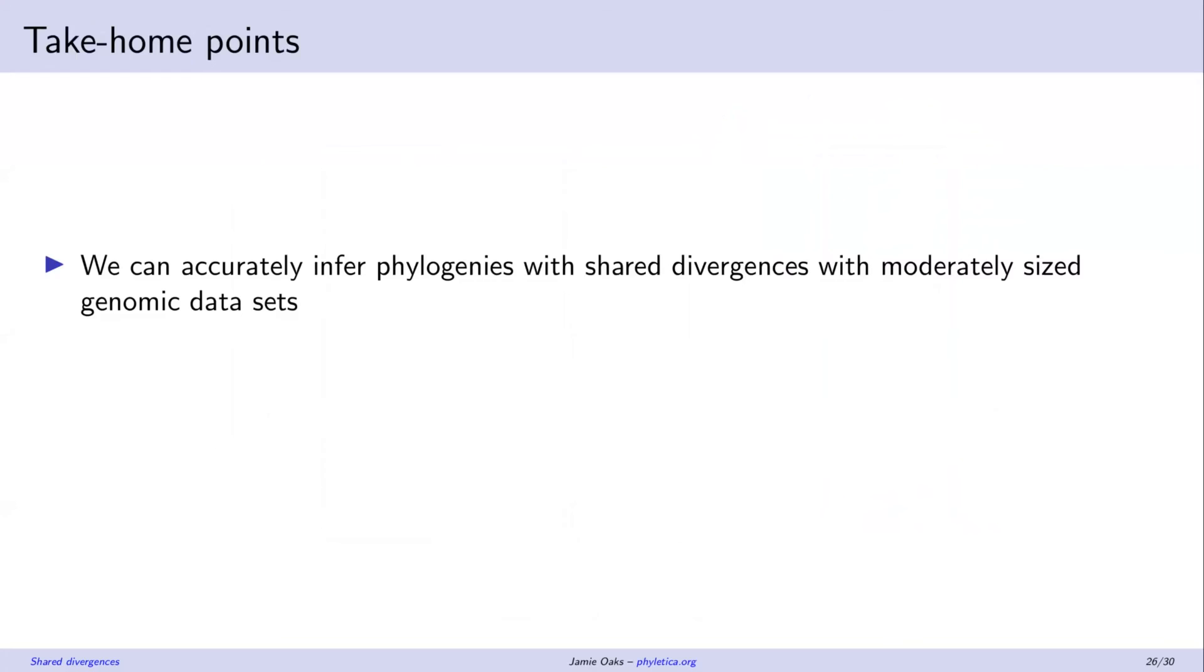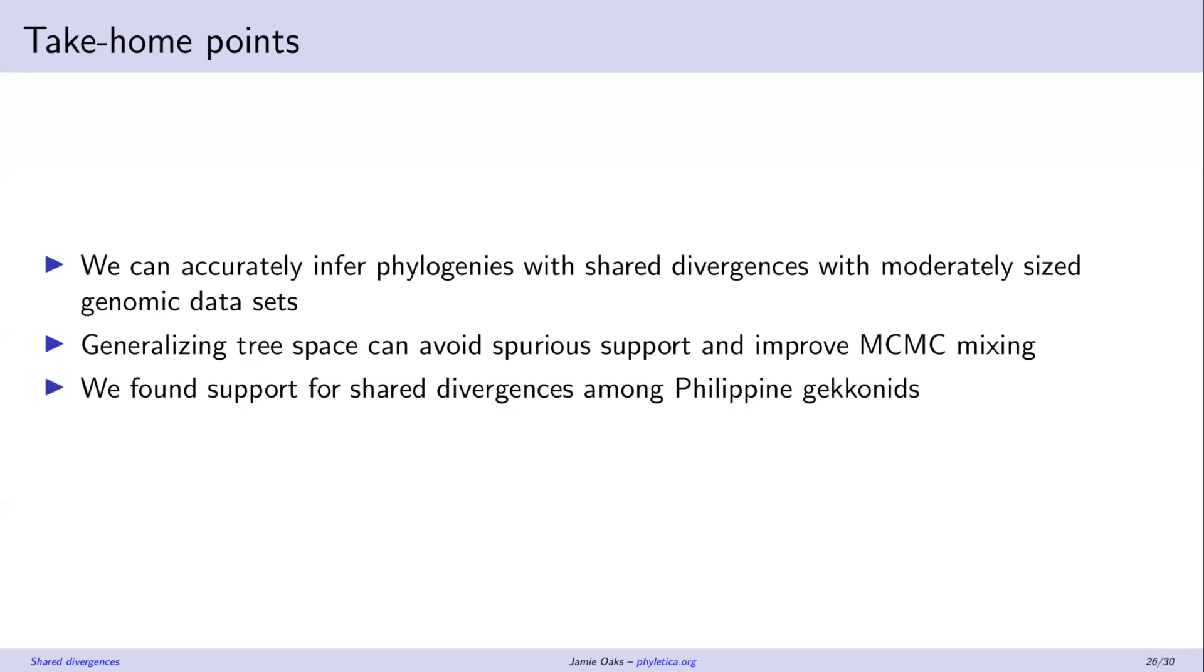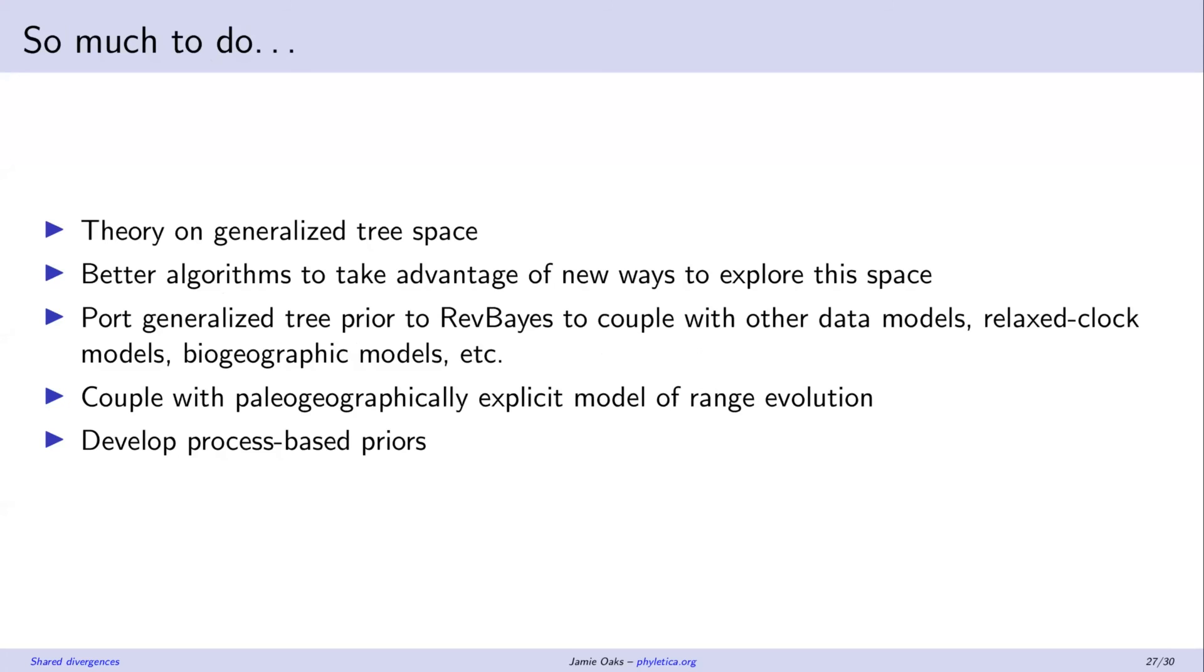Okay, so very quickly, take home points. We seem to be able to accurately infer shared divergence times and multiplications for moderately sized genomic data sets. And generalizing this space has other benefits. It seems to improve MCMC behavior. And we are finding support for shared divergences that are predicted by island fragmentation in the Philippine geckos and lizards. And there's just so much more to do. So if you're interested in this, definitely let me know.